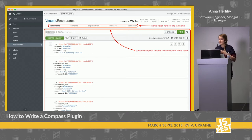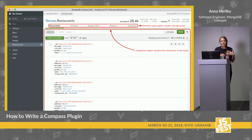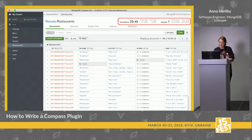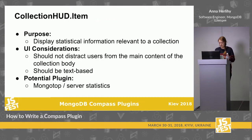The lowest level is the collection level, where you actually have access to the documents. Here we have everything from aggregations to indexes, analyzing your query and explain plan to check if it's optimal. This is where you'd put interactive or more complicated plugins. The last option is the collection level header item, called a heads-up display. It's a small UI area for metadata, but you do have access to all of your actual documents in this plugin.